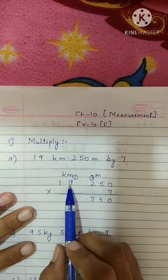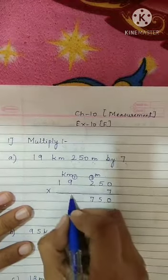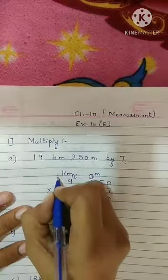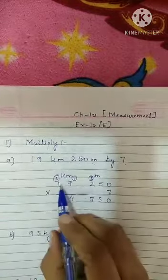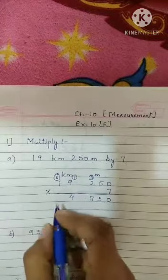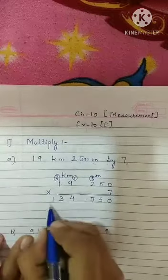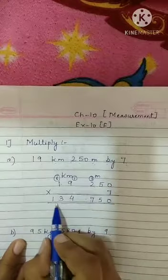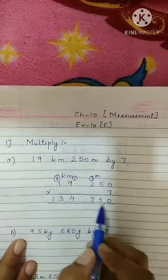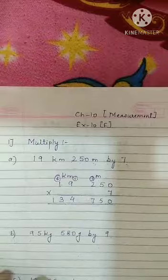9, 7 nines are 63 plus 1, 64. Write 4 and 6 carrying over. 7, 1 seven is 7 plus 6 is 13. So what is the answer? 134 Kilometers, 750 meters. Very, very easy.